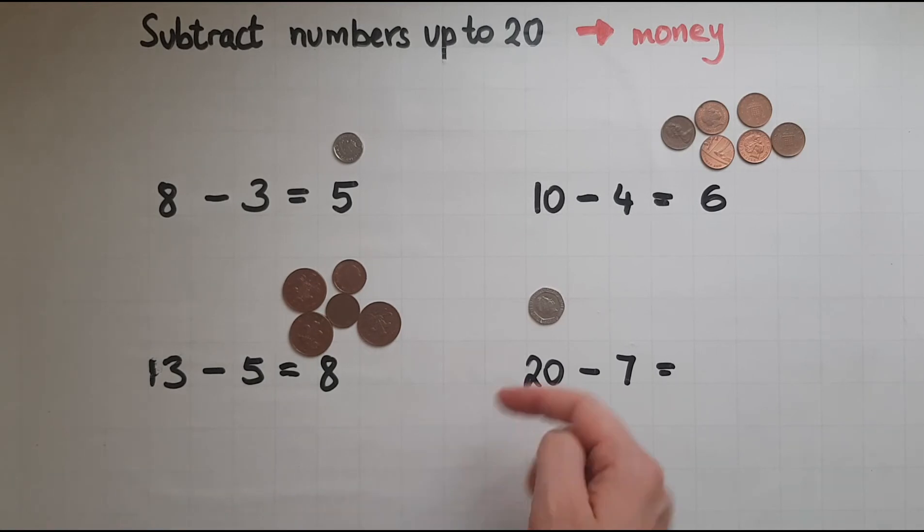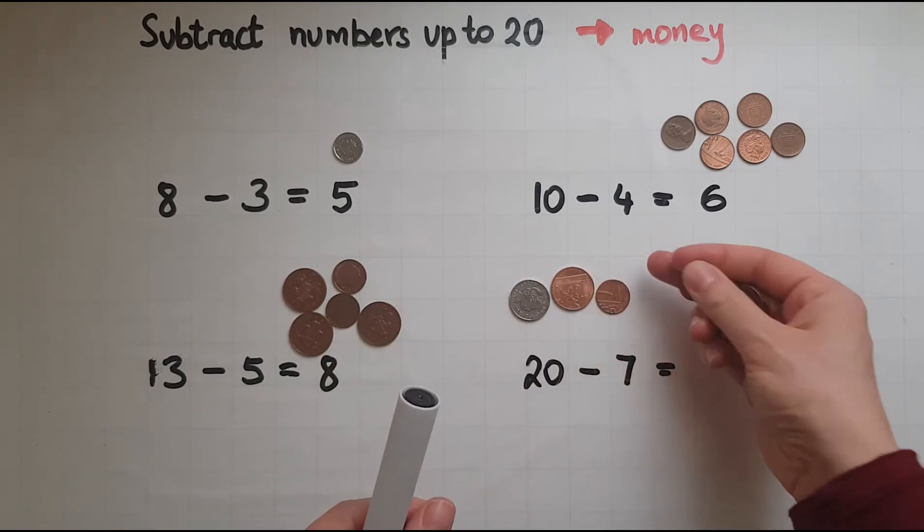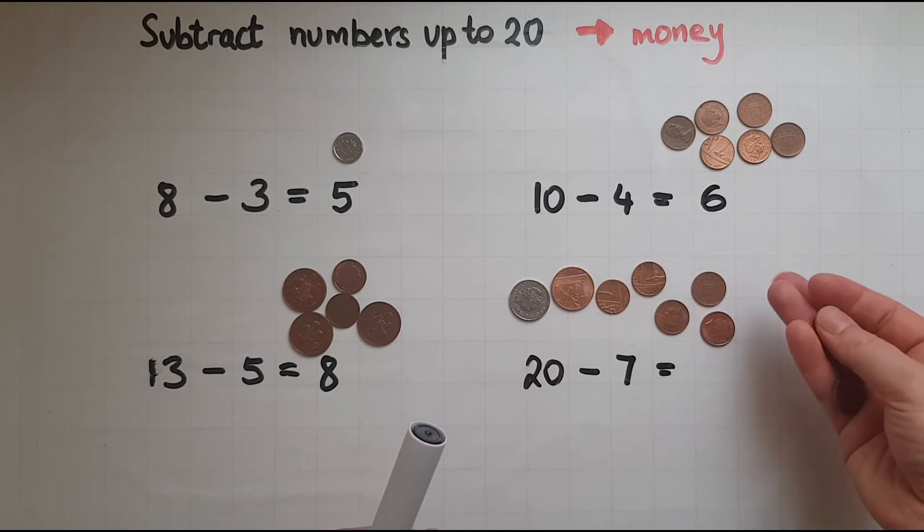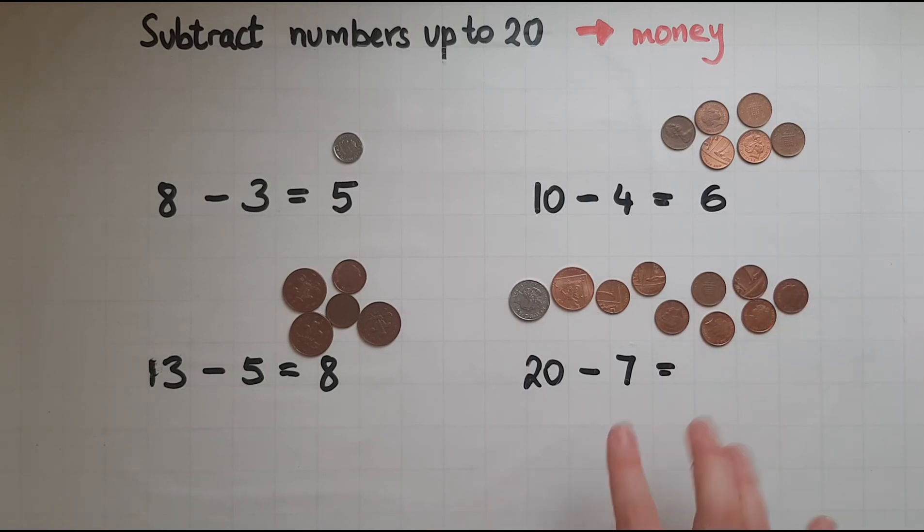So there is a 20. I've got 10, 12, 13, 14, 15, 16, 17, 18, 19, 20.